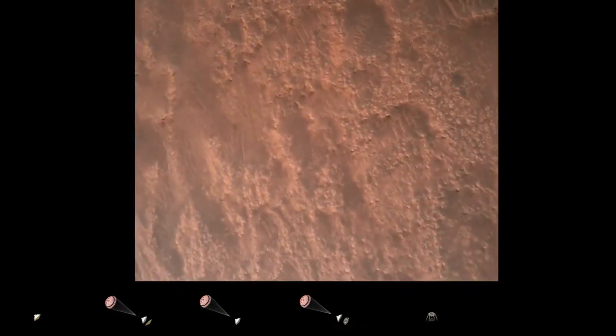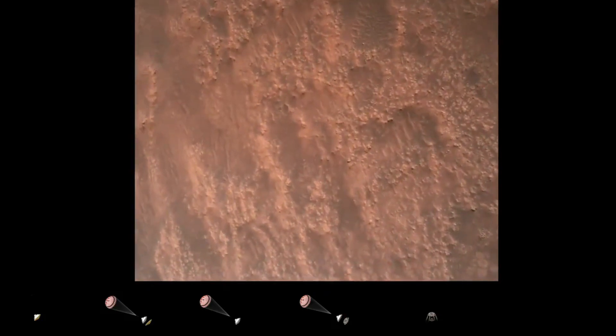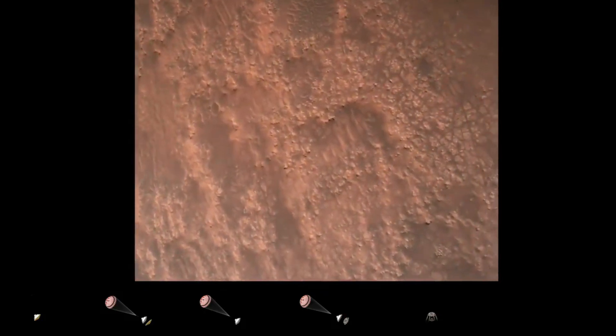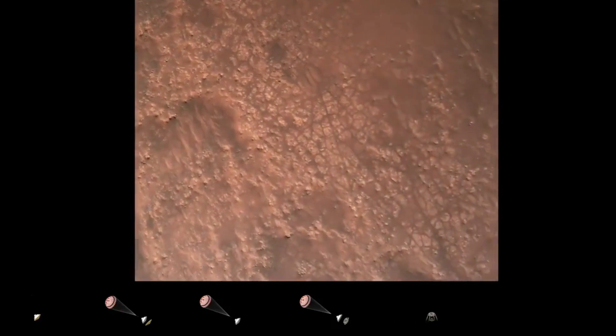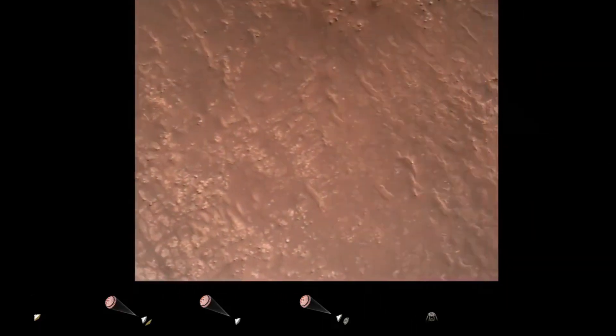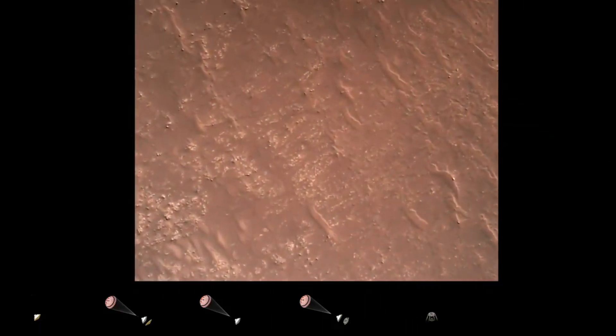Hearing safety, bravo. We have completed our terrain relative navigation. Current speed is about 30 meters per second, altitude of about 300 meters off the surface of Mars.